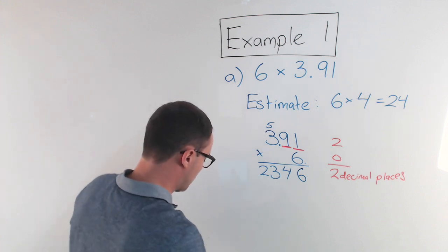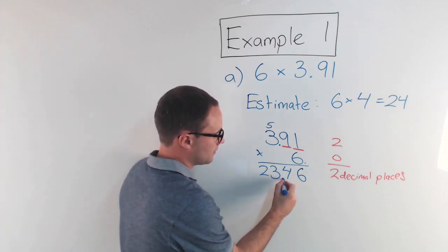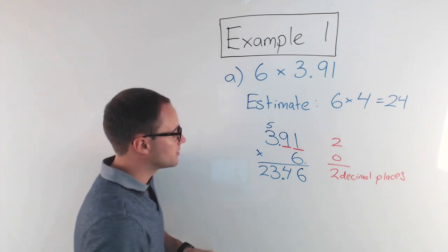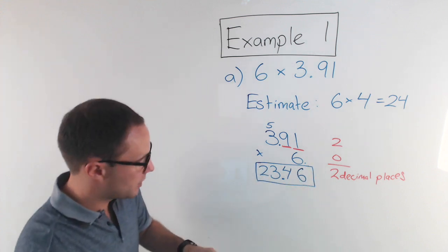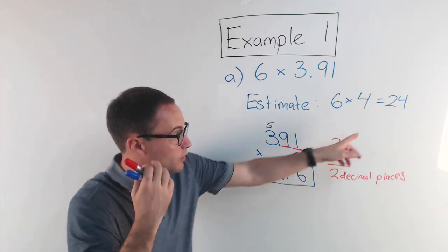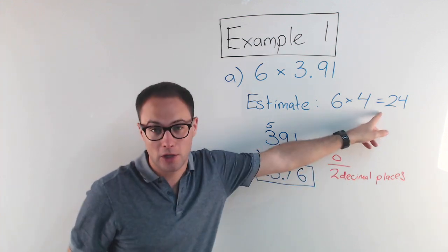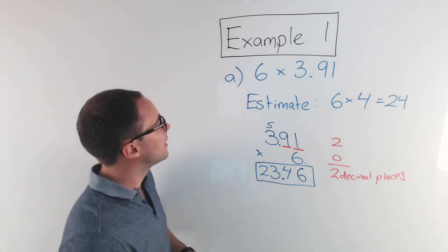Okay, so one, two. The decimal point goes there, and that is our product, that's our answer: 23.46. And let's check—does that make sense with our estimate? Yeah, it's really really close, so we know we're good. Okay, let's try another one, another example.